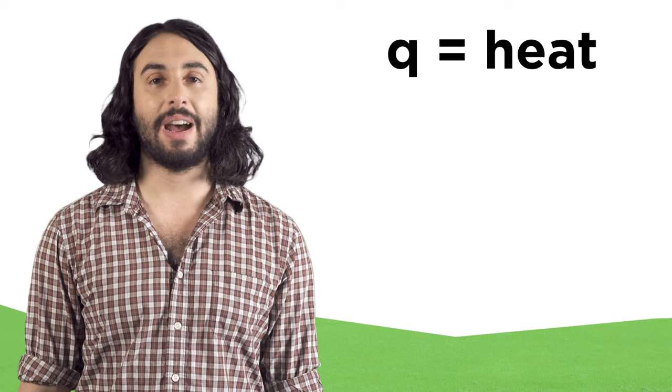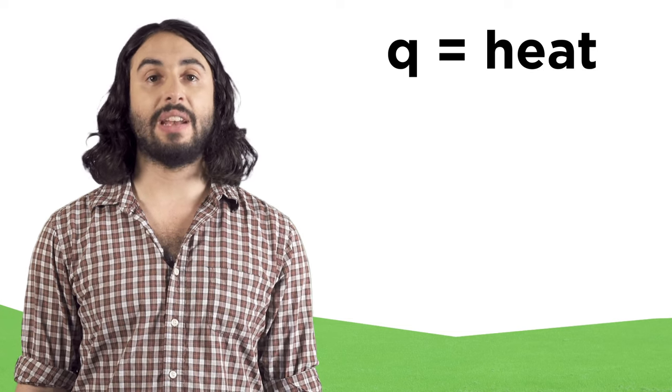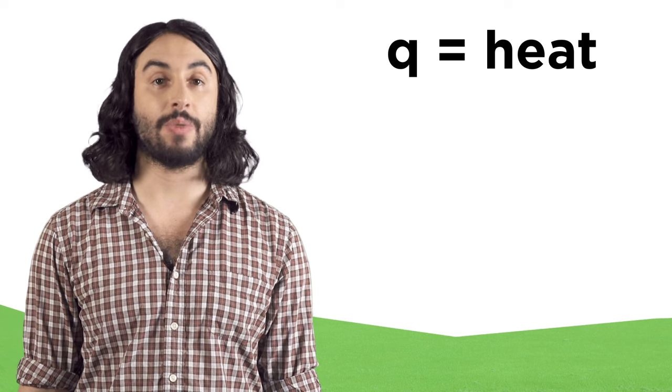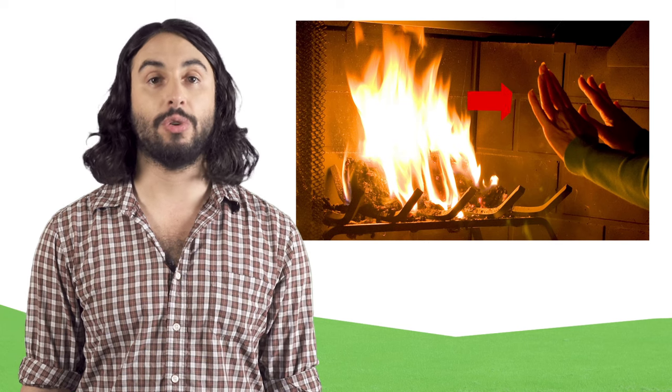Heat, represented by the letter q, is a trickier thing to define, but a good way to put it is that heat is the energy that flows between a system and its surroundings due to a difference in temperature. Heat will always flow spontaneously from an area of high temperature to an area of low temperature.